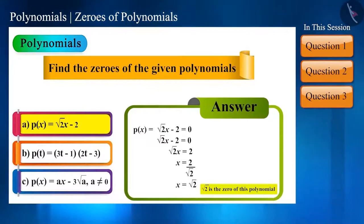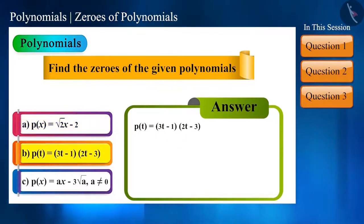Now, let us take the next polynomial. P(t) = (3t - 1)(2t - 3). Friends, here, (3t - 1)(2t - 3) = 0 means that when 3t - 1 is multiplied with 2t - 3, it results into 0. And this is possible only when one of the two terms is 0.